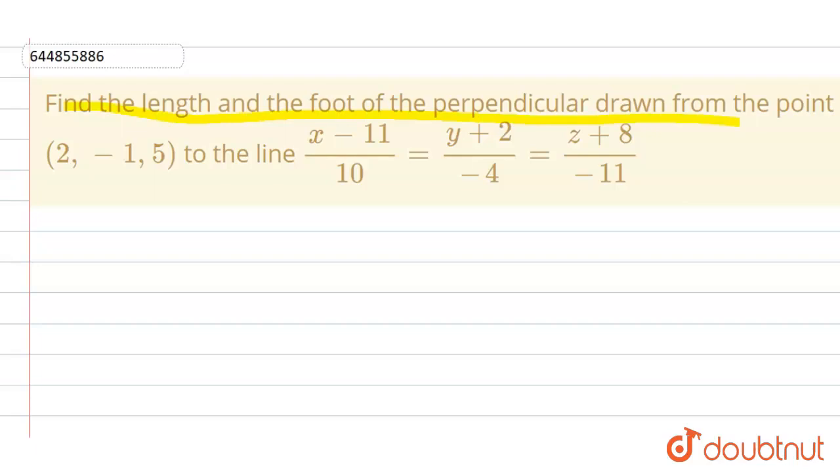(2, -1, 5) to the line (x - 11)/10 = (y + 2)/(-4) = (z + 8)/(-11). So we have given point (2, -1, 5) and we have given line equation which is equal to (x - 11)/10 = (y + 2)/(-4) = (z + 8)/(-11).